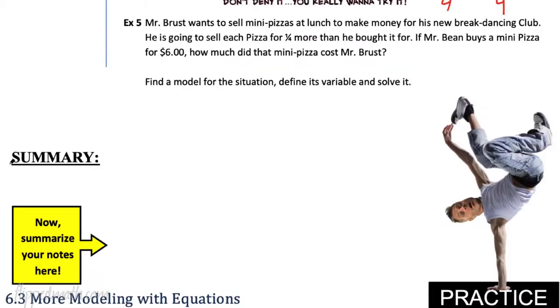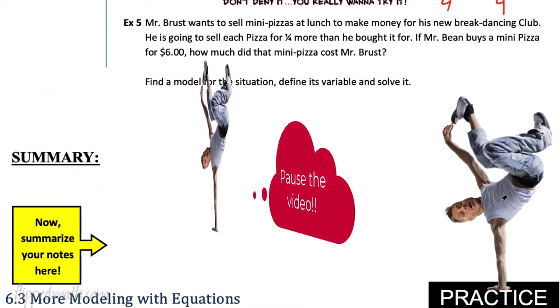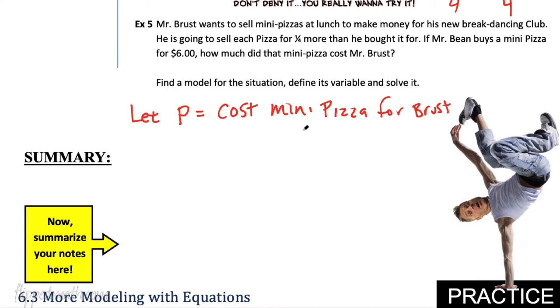So now with number five, I want you, don't deny it, because I know you really want to try it. Number five. Read, I'm not even going to read it to you. Read the question and then try to do it. It's just like that Sully t-shirt one above. They're very similar to the t-shirt one. And this is about Mr. Brust and his breakdancing club. Pause the video and try that all by yourself. Time to go over. I'm going to start by letting P equal the cost of the pizza. Or you could use C, I guess, too. But I'll use P. P equals the cost of the mini pizza for Brust. So the cost of the pizza, one pizza for Brust. And then it says he's going to sell it for a quarter more than he bought it for. So he's going to add a quarter more of whatever it used to be. Whatever that pizza used to be, the cost of that pizza. And it all equals six dollars, we know, because that's what Mr. Bean bought it for.